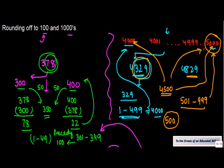So, 4329, 329 is the last number, it lies between 1 to 499, so the rounding off has to be done to 4000.